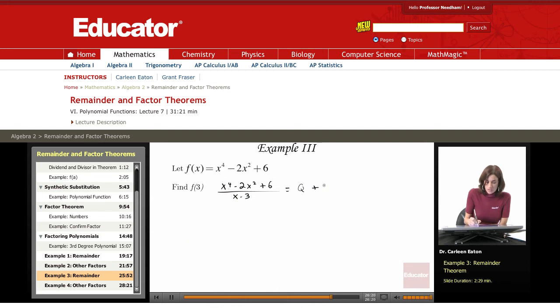I'm going to get a quotient plus the remainder, and the remainder is going to equal f of 3. Using synthetic division,